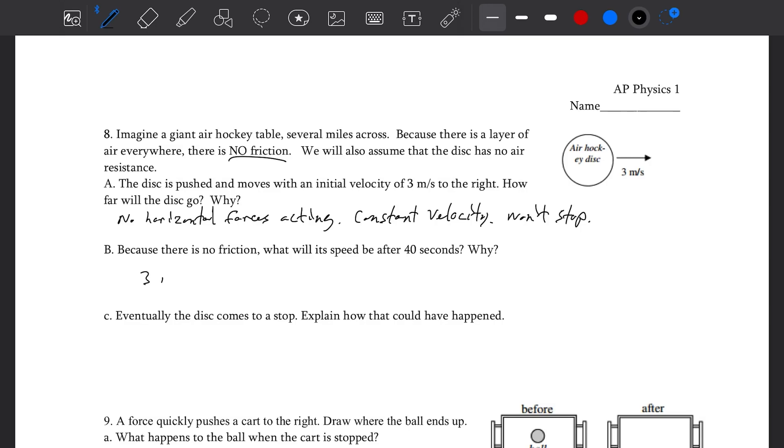Because there is no friction, what will the speed be after 40 seconds? Still 3 meters per second. You don't have to use kinematics, you're not solving for anything, you're understanding the concept. Here, it's 3 meters per second because you've got balanced forces. And that indicates a constant velocity. Eventually the disc comes to a stop. Explain how this could happen. Another force must have acted. The only way to change the velocity, to go from 3 to 0, that's an acceleration. You need unbalanced forces. You need an external force to act on the system.